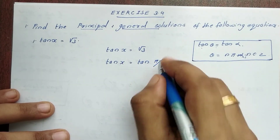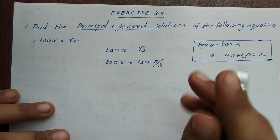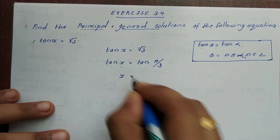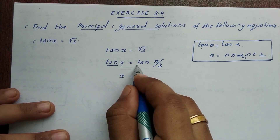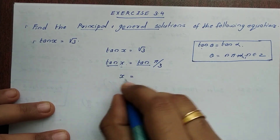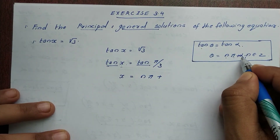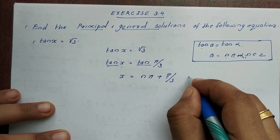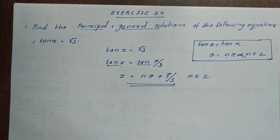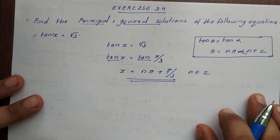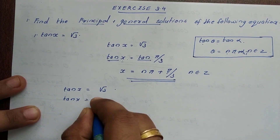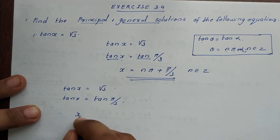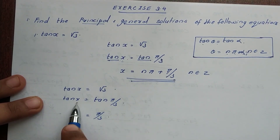So tan x is equal to tan α. We write tan x is equal to tan(π/3), since tan(π/3) equals root 3. So x is equal to π/3.